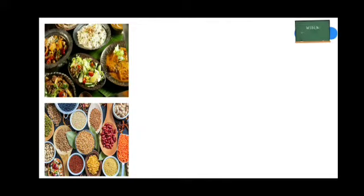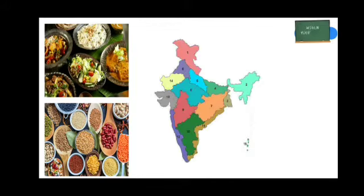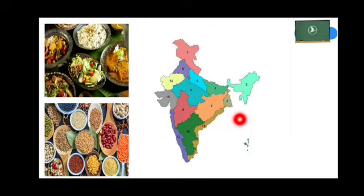Before moving on to today's session, let's revise the concepts that you have learnt in the previous class. In the previous class, you have learnt about food, the food variety, and the ingredients that are used to prepare food. Along with that, you have also learnt about the different regions and their predominant crops that are grown in different regions of India.